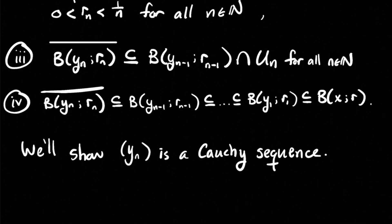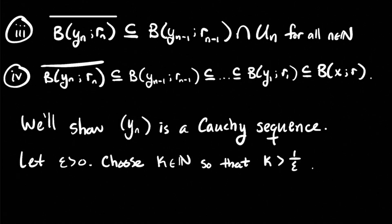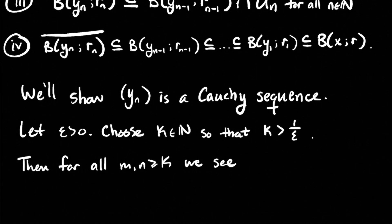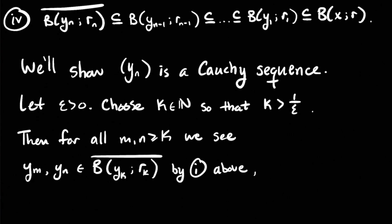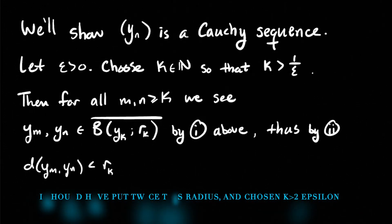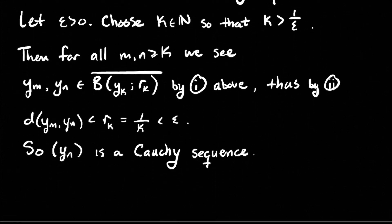We use these observations to show Y_n is a Cauchy sequence. Let epsilon be a positive real number. Choose natural number k so that k > 1/epsilon — possible by the Archimedean property. Then for all indices m and n greater than or equal to k, the points Y_m and Y_n are in the closure of the ball centered at Y_k of radius R_k, which means Y_m and Y_n are within R_k of each other, and R_k < 1/k < epsilon. That shows Y_n is a Cauchy sequence.